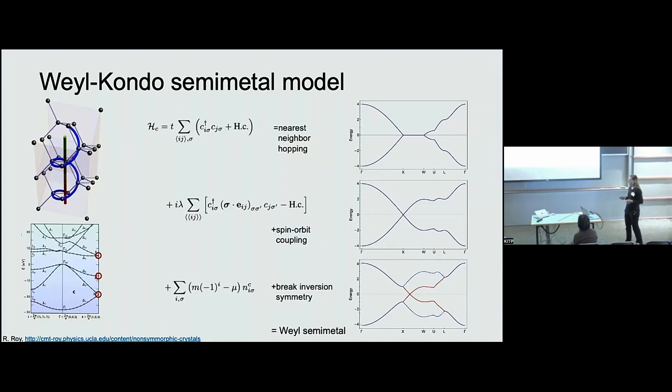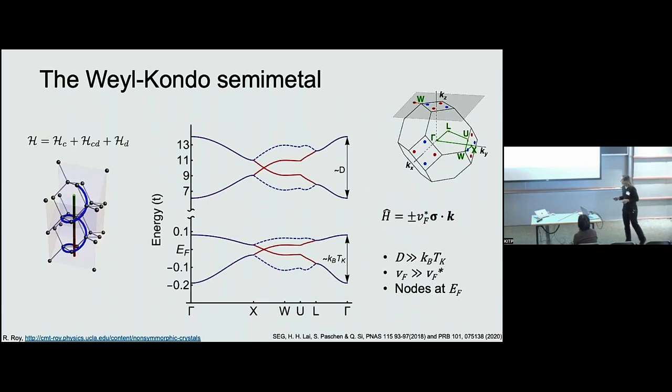But we can put this picture together into the full Anderson lattice model. And we do find this band structure with a highly renormalized quartet of bands with Weyl nodes along the XW lines of the Brillouin zone close to the Fermi energy, which is at which the nodes are pinned. We find Weyl nodes arranged in this configuration on the Brillouin zone.